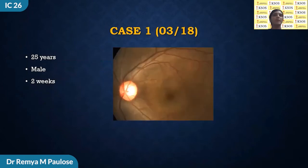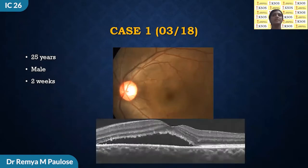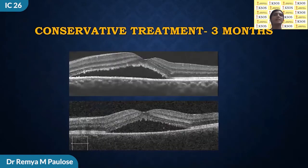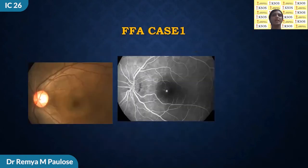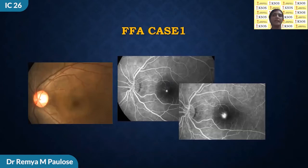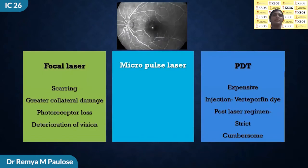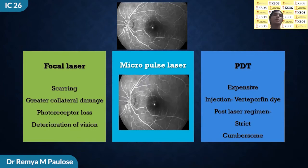A 25-year-old male presented with defective vision of two weeks duration, a typical case of central serous chorioretinopathy with subretinal fluid. He was managed conservatively for three months but did not resolve with regard to subretinal fluid or visual acuity. Fluorescent angiography revealed a well-defined subfoveal leak at the fovea in an inkblot kind of pattern. Focal laser was not done due to the risk of scarring and greater collateral damage; when done at the fovea, it can cause photoreceptor loss and deterioration in vision. PDT was not opted for because it was expensive and the patient could not afford it; injection of verteporfin dye is required and the laser regimen is strict. So micropulse laser was considered.